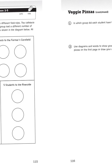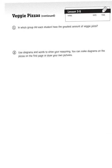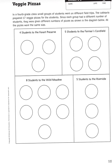So, before we get into dividing pizzas, let's read further. It says, in which group did each student have the greatest amount of veggie pizza? Then number two says, use diagrams and words to show your reasoning. You can make diagrams on the pizzas on the first page, or draw your own pictures. Well, since they already provided us with some circles, let's just use these.